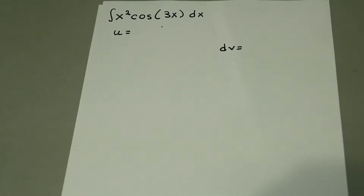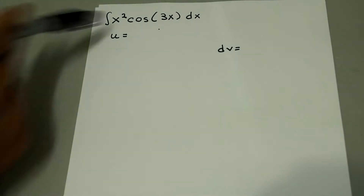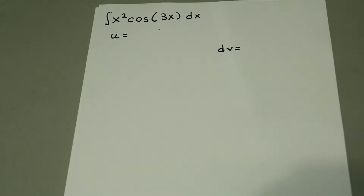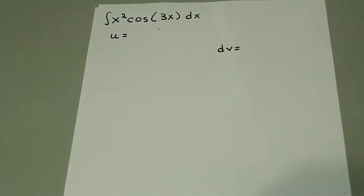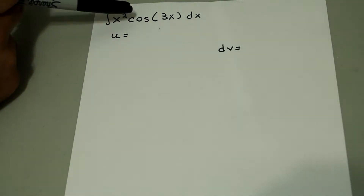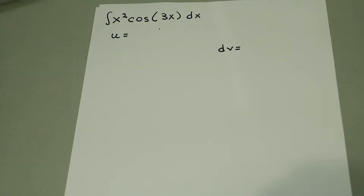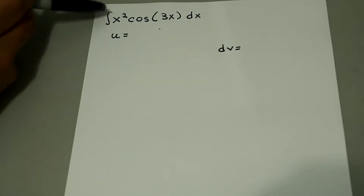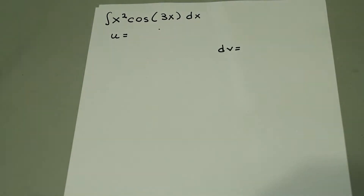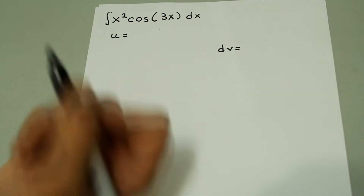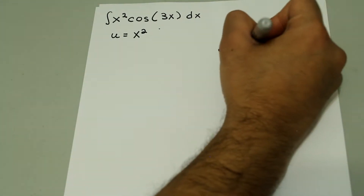First, let's talk about why we have to use integration by parts in this case. We can't just integrate this problem normally. If we use u-substitution and set u as x squared, what would happen to the cosine of 3x? Or if we set u equal to cosine of 3x, what would happen to x squared? If we didn't have the x squared, we could use u-substitution to integrate cosine of 3x dx. So how do you get rid of the x squared? If we derive it, every time we derive x squared the power reduces, and eventually we can get it to just be a number. So x squared is going to be our u, because it will derive into du, and cosine of 3x is dv.